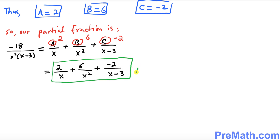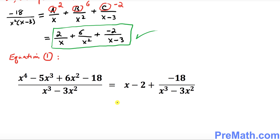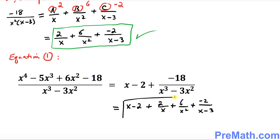Our partial fraction decomposition is 2 over x plus 6 over x squared minus 2 over x minus 3. Going back to equation number 1 from the long division step, our complete final answer is x minus 2 plus 2 over x plus 6 over x squared minus 2 over x minus 3. That is our complete answer. Thanks for watching and please subscribe to my channel for more exciting videos.